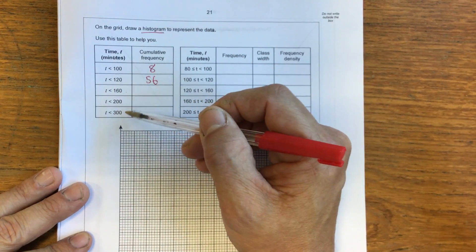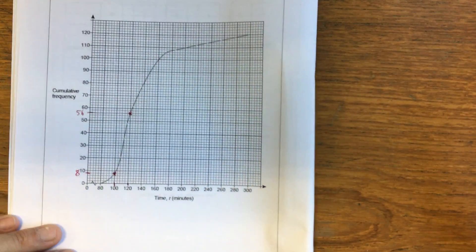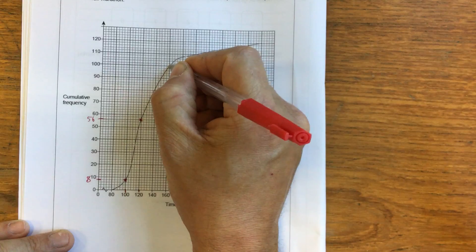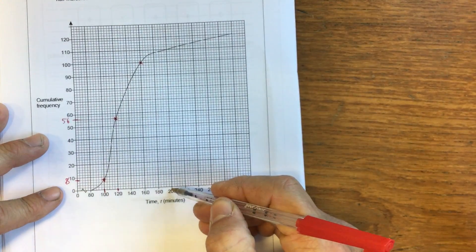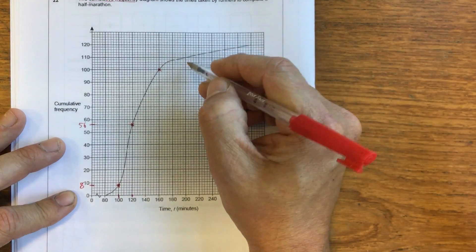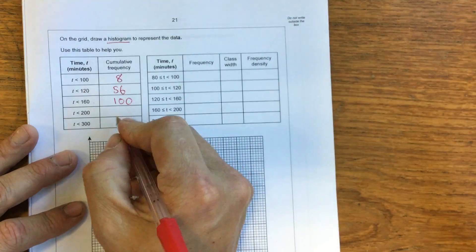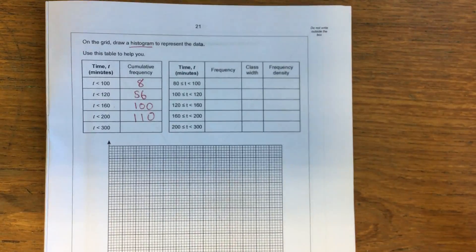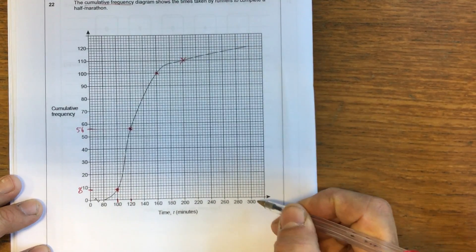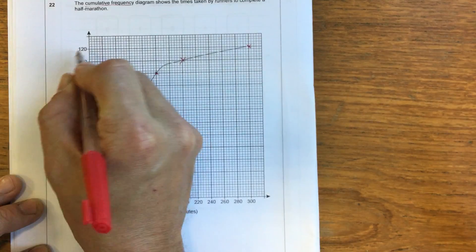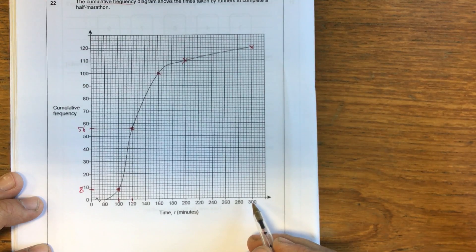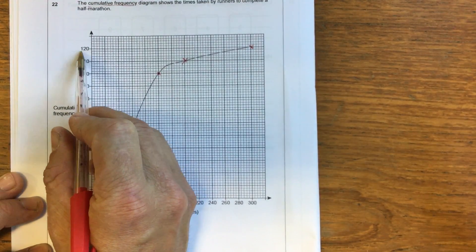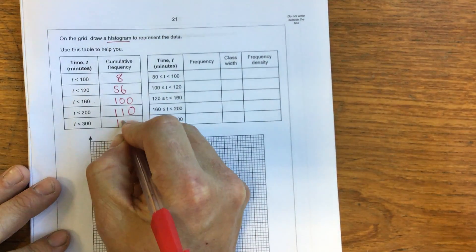And now you repeat the process for 160, 200 and 300. So 160, I project up and across and I get 100. So by the time we got to 160 minutes, 100 people have come through. By the time we got to 200 minutes, we can see that 110 people have come through. And then time less than 300. At time 300, this relates to 120 people. So this suggests that the slowest person was 300 minutes. And by the time 300 minutes had passed, all 120 people had completed the race.